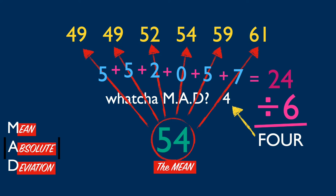4 is the MAD — what you mad for, queen? First, find the mean of the whole set. Next, find the distance from the mean to each element. Lastly, find the mean of those distances — and that's it. Mean absolute deviation.